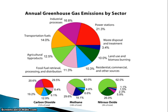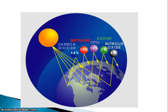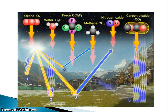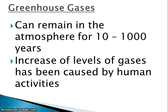This chart is showing greenhouse gas emissions. Greenhouse gases can remain in the atmosphere for 10 to 1,000 years, and because of this, it increases the levels of gases due to our human activities. It compounds the amount because each year we add more in.